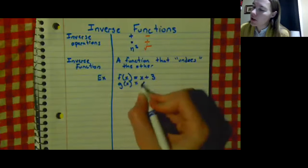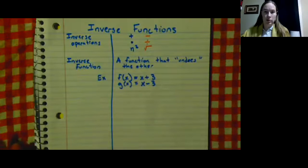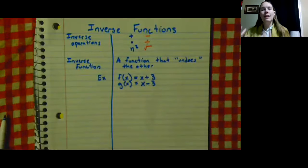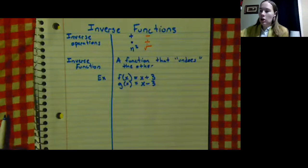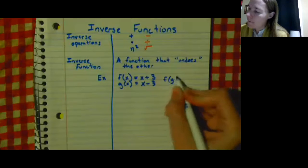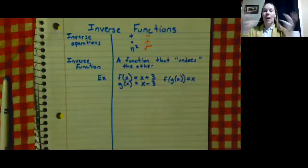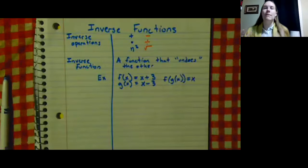So for the function that would undo it, it would be x - 3. So technically, if you were to compose them and find f of g of x, you would get x. And that's a way to check it. If you find f of g of x, you should just get x, so they undid each other, so all that's left is the variable.